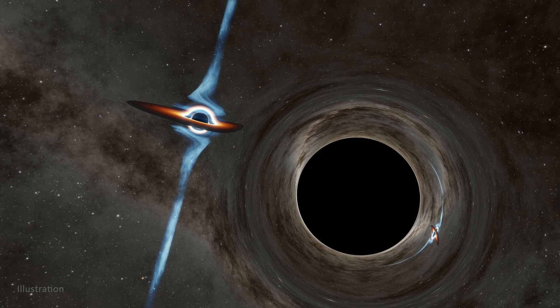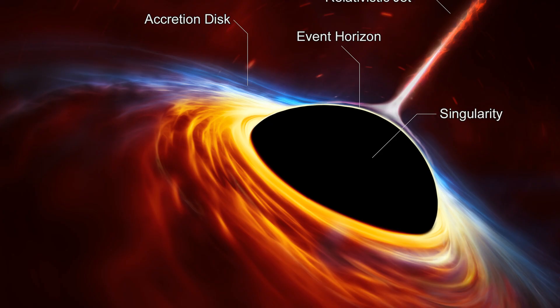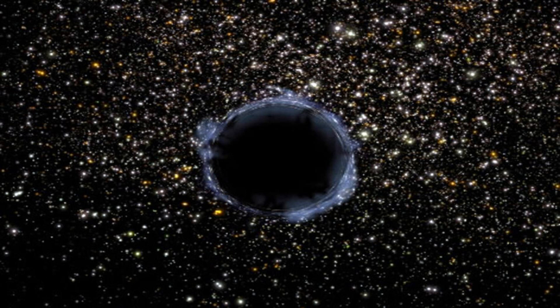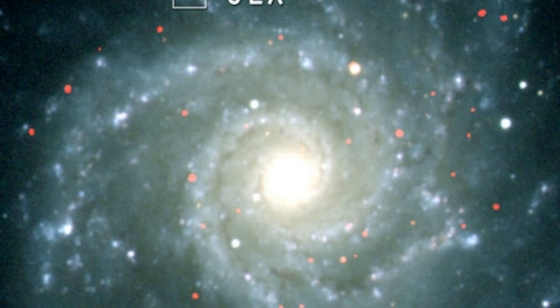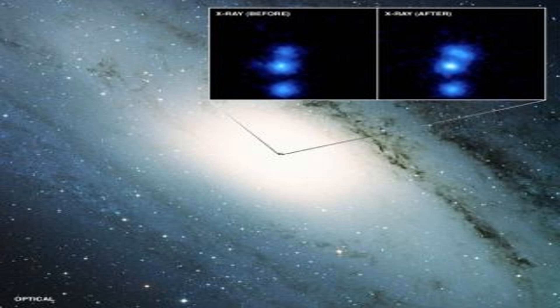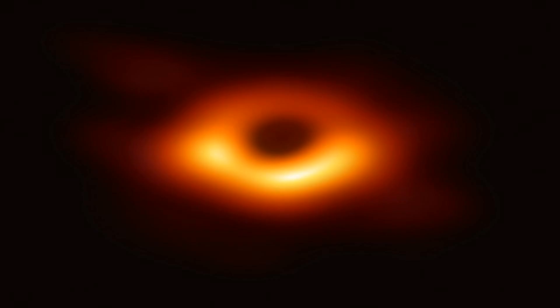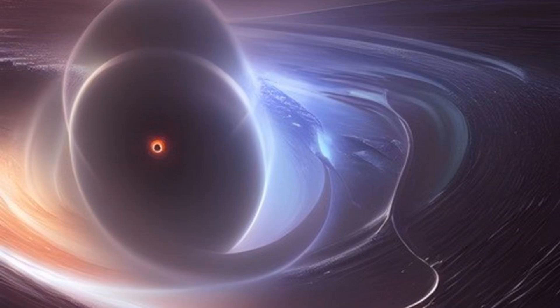Black holes exhibit some very interesting and bizarre behavior. For example, time near a black hole appears to slow down due to the immense gravitational force. Additionally, black holes can warp and bend spacetime, causing light to curve around them in what is known as gravitational lensing. Moreover, black holes can merge with each other, creating even stronger black holes. In some cases, this can be accompanied by gravitational waves, which are ripples in spacetime.